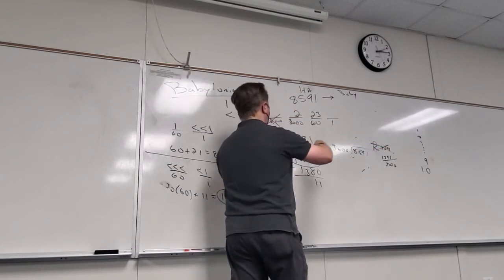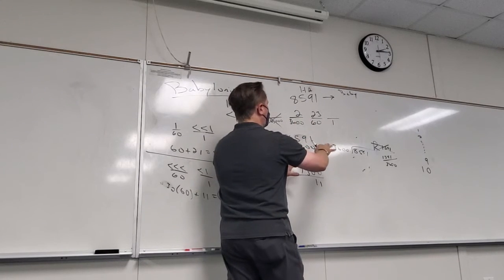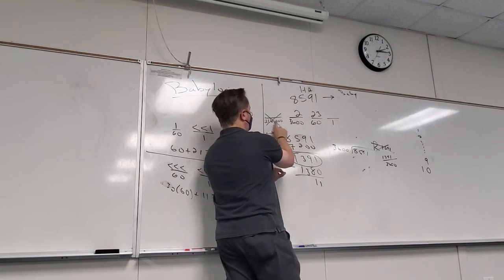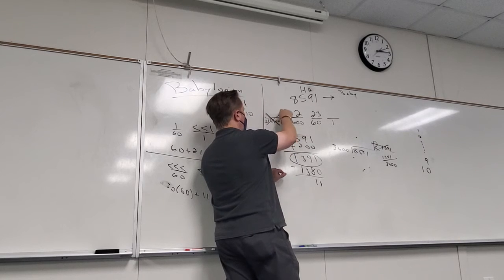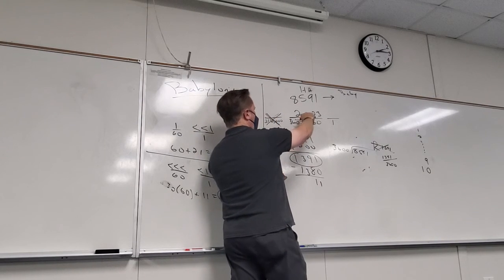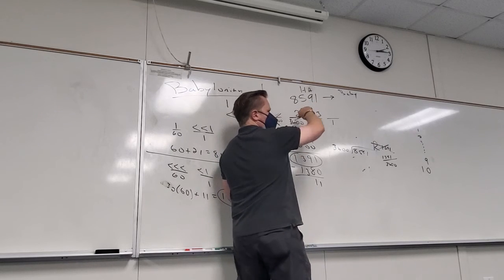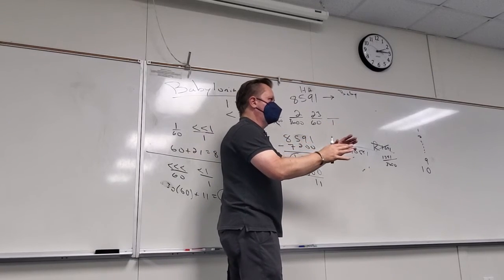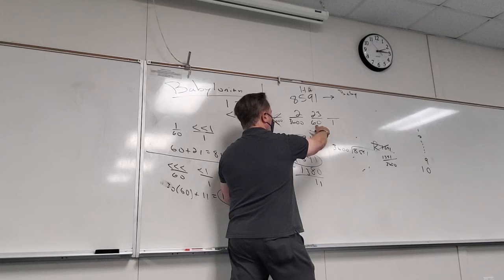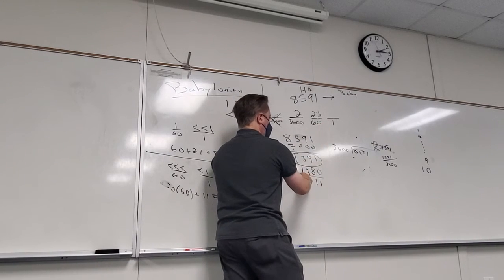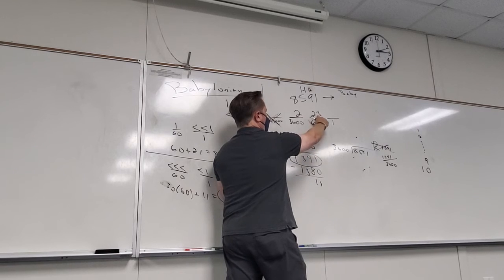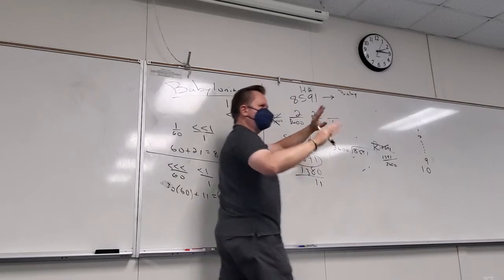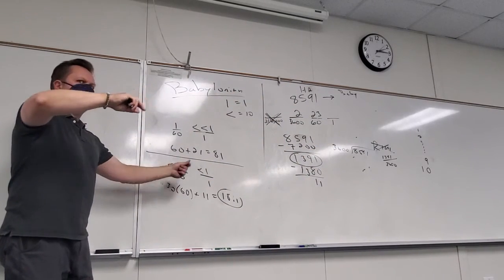So whenever I'm translating from Hindu-Arabic to some other system, I'm kind of starting at the high end. So how many places am I going to need? I need the ones place, 60s place, 3,600. What's the next place, out of curiosity? 216,000? Right, multiply by 60 again.